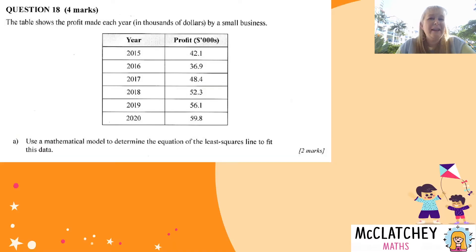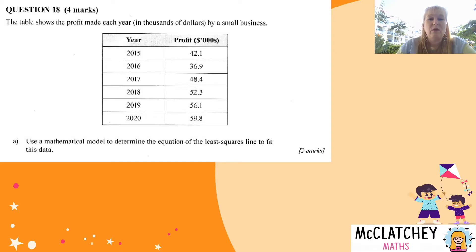Our next and last question on Paper 1 for bivariate data is Question 18. The table shows the profit made each year in thousands of dollars by a small business, with years on the left-hand side and profit on the right-hand side.